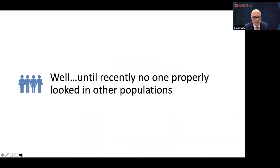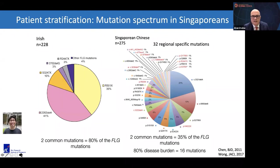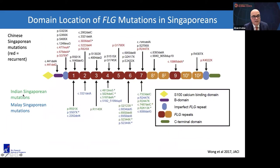Asthma risk from filaggrin mutations exists only in the presence of pre-existing atopic dermatitis. Filaggrin loss-of-function mutations are risk factors in European, Japanese, and Singaporean Chinese patients. A new rapid-throughput technique using microfluidic amplicon array and NGS has looked at different populations. In Singaporean Chinese, two common mutations account for 35% of all filaggrin mutations, but 16 mutations make up the rest of the burden. Breaking down by ethnicity in Singapore shows Indian, Malay, and Chinese Singaporeans each have recurrent mutations plus many ethno-specific mutations.